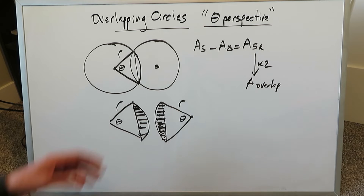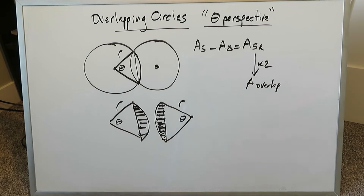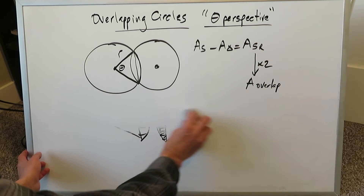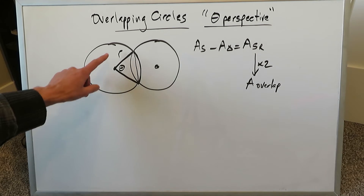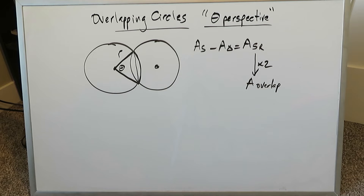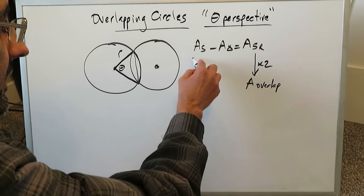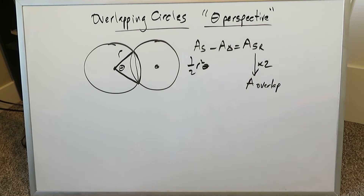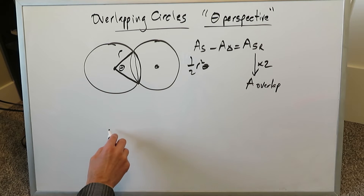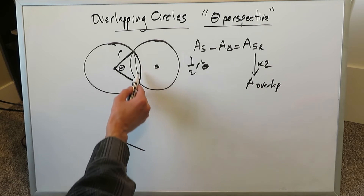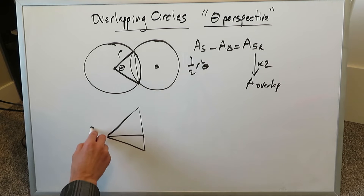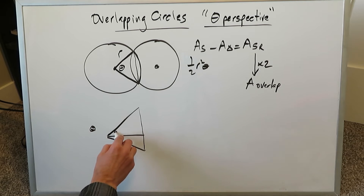The theta perspective is actually easier to work with than the approach shown in the previous video. When you have a radius and a theta, the area of the sector is already half r squared theta — that part is already done. Our main determination is the triangle. When you take this triangle and pluck it out, the theta angle gets split into two parts: theta over 2. Focusing on one right triangle, you have theta over 2, a 90-degree angle, a radius as the hypotenuse, a height, and a base.